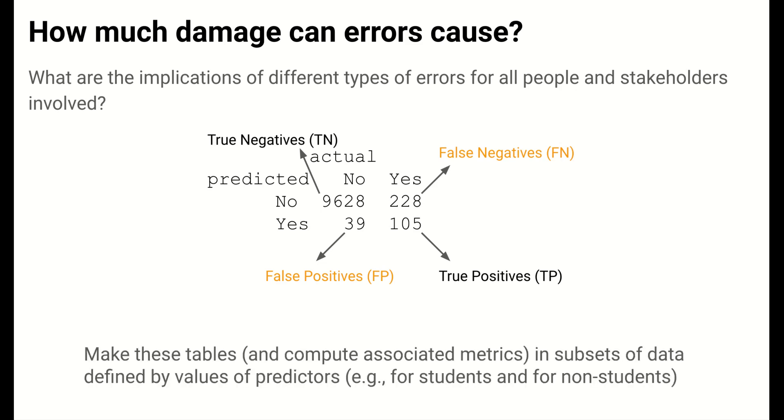Further, much like our inspection of residuals as a function of predictors in regression settings, it's important to look at confusion matrices and related metrics that can be computed from them as a function of predictors. This type of error analysis is vital for understanding any systematic biases in our model predictions.